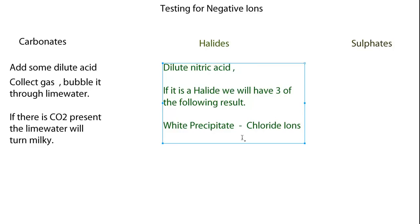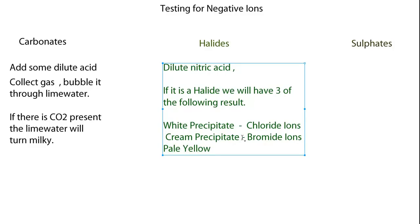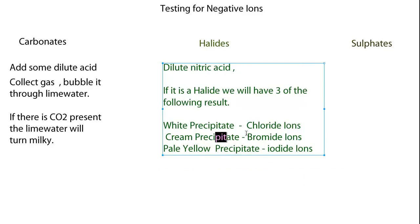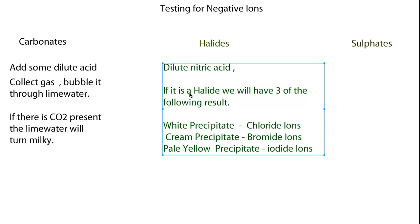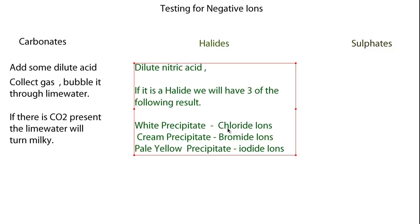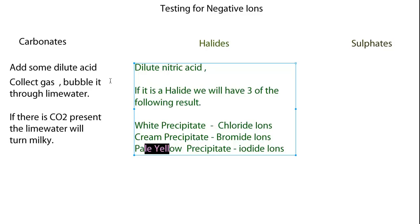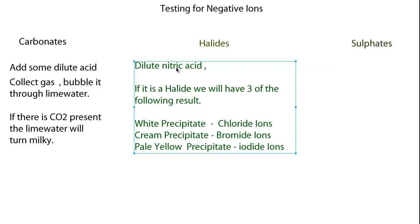If we have a cream precipitate, it means we have bromide. And if we have a pale yellow precipitate, it means we have an iodide ion. These three ions — chloride, bromide, and iodide — all fall under the umbrella of a halide. So if you've got a chloride ion, it falls under the family of a halide. In your investigation, you are looking for either a white, cream, or pale yellow precipitate when you add your dilute nitric acid to your unknown substance.